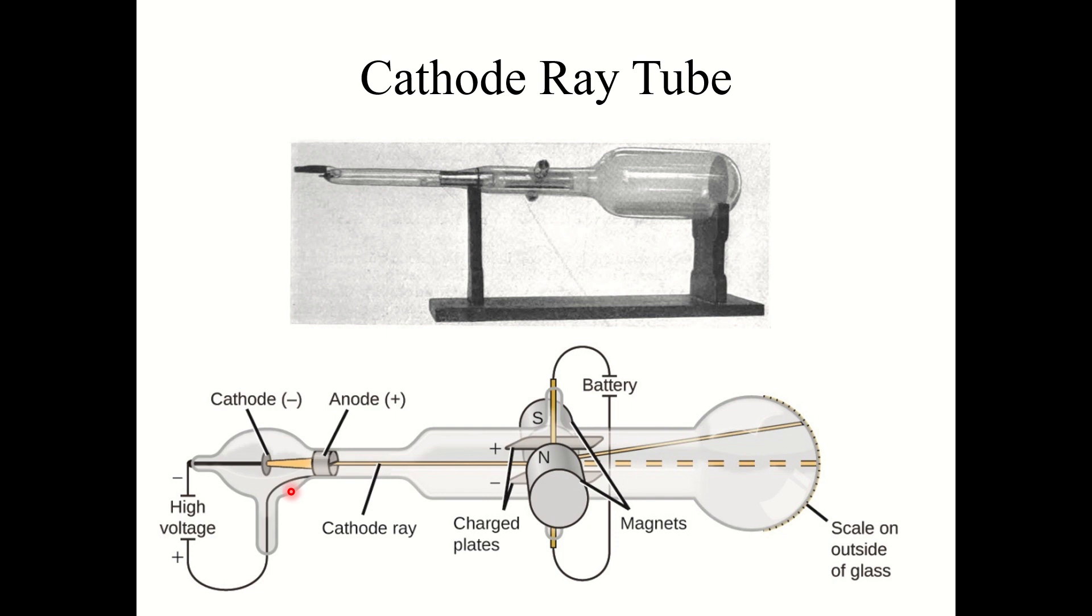So what he did with the cathode ray here is he put it inside this tube and about halfway down the tube he had these two charged plates. And then on the end of the tube here there was a fluorescent scale that would light up when it was struck with the charged particles so he could track where the ray was striking. So when he turned the ray on and then turned these charged plates on, what he noticed is after the cathode ray went through these plates, the ray would bend. It was not going at that perfect parallel angle anymore. It would bend.